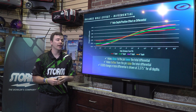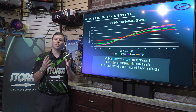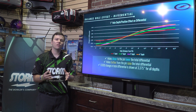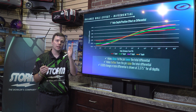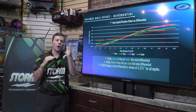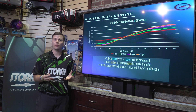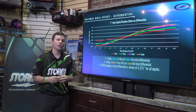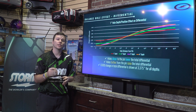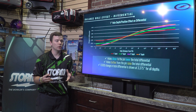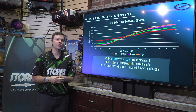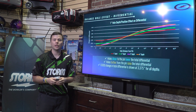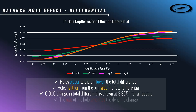There's zero change in total differential at three and three-eighths inches away from the pin for all the different depths — they all cross at that same point. The reason for that is at three and three-eighths inches, you're exactly halfway between the X and the Y axis, so you're affecting both of them the exact same amount, resulting in no change in total differential.